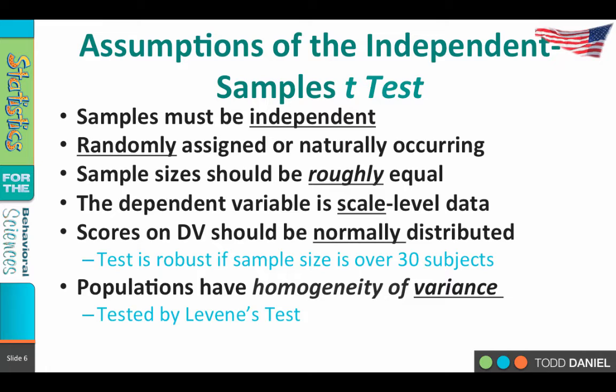Now let's talk about the assumptions for the independent samples t-test. First, the samples must be independent of each other — this isn't a before-after setup or something where we've consciously paired groups together. The samples should be either randomly assigned or naturally occurring. So your independent variable — the groups — should either be randomly assigned as part of your research design, or they could be naturally occurring independent variables, sometimes called pseudo-independent variables, such as comparing men to women. Men and women are not randomly assigned because you are one or the other, and we take you as we find you.